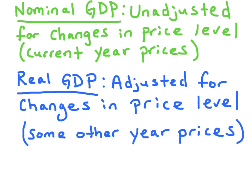Nominal GDP is the gross domestic product that has not been adjusted for changes in price level. It's the current year prices.